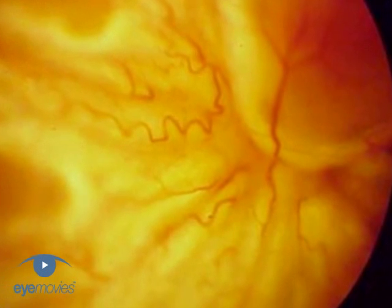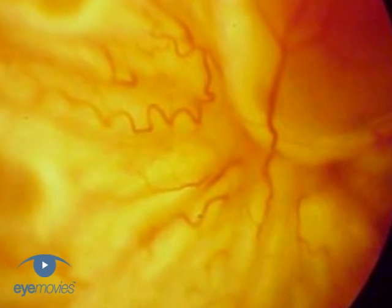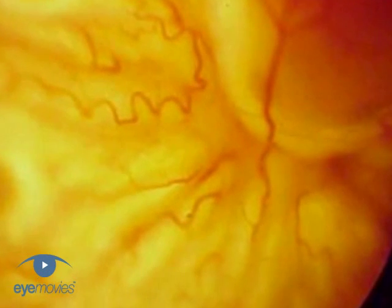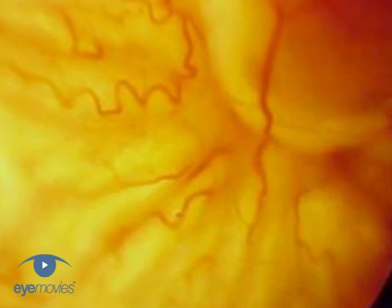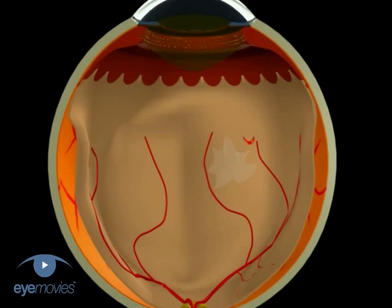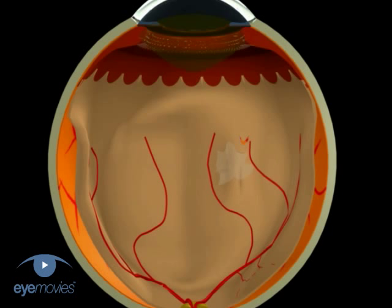Posterior proliferative vitreoretinopathy, or PVR, is caused by contraction of a focal epiretinal membrane, or starfold.